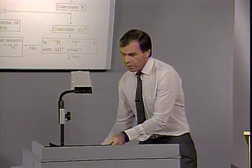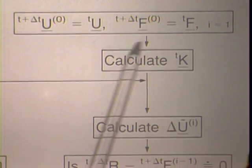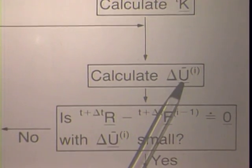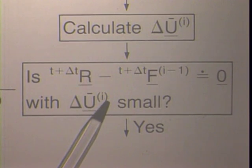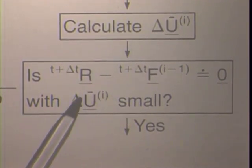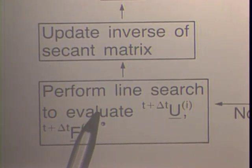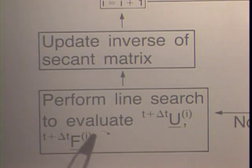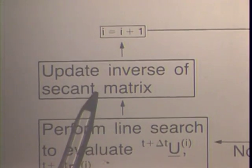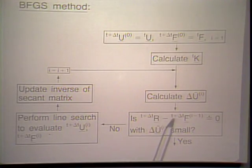In the BFGS method, we proceed as follows. We initialize displacements and nodal point force vectors corresponding to internal element stresses. We calculate tK, then calculate the incremental displacement vector with the bar. We measure convergence if i is greater than or equal to 2. We perform a line search, having calculated the actual increment in nodal point displacement to add to the previous displacement. We then update our inverse secant matrix the way we discussed, increment the counter, and keep cycling through until we find convergence.